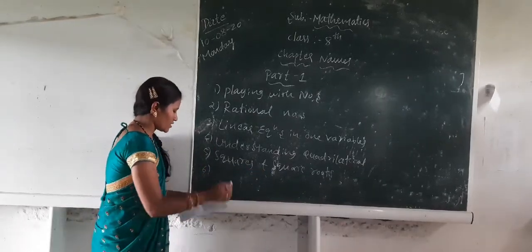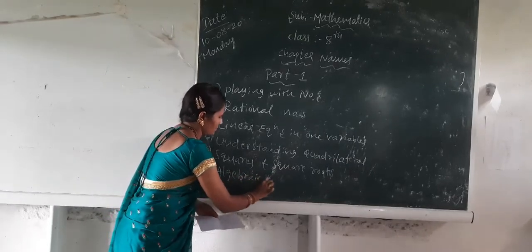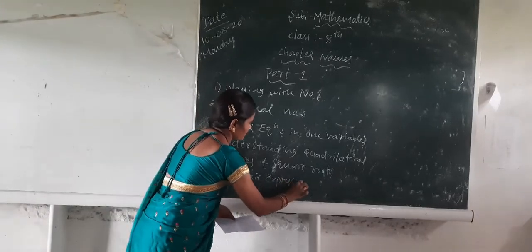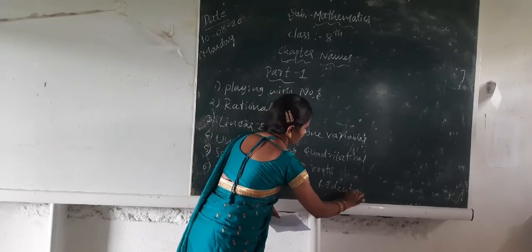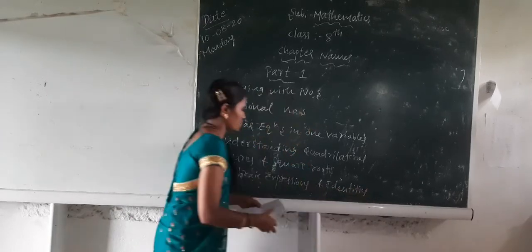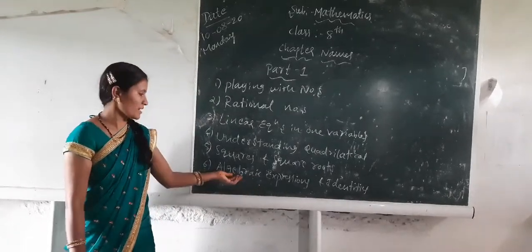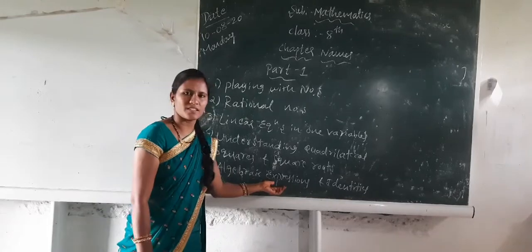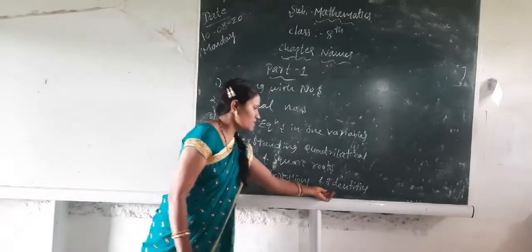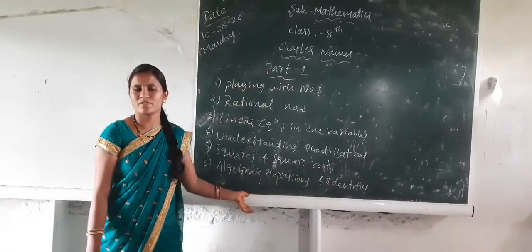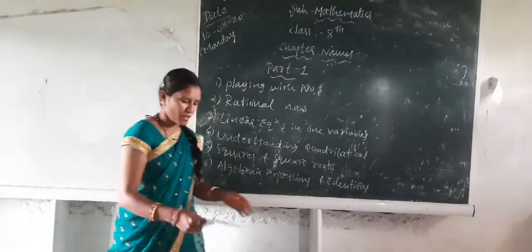The sixth chapter is Algebraic Expressions and Identities. We have to solve algebraic expressions, and identities means formulas — they are given here. You already know the a-plus-b whole square and a-minus-b whole square formulas. As you know, those formulas are applied here using the formula method.